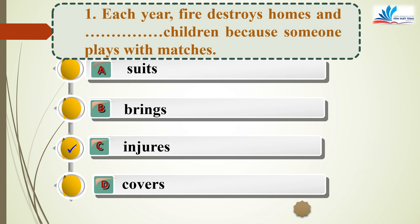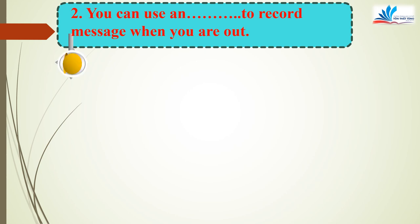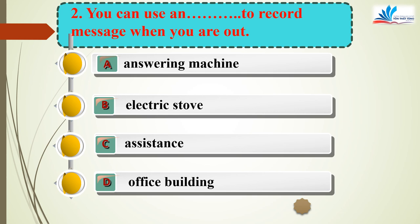Injures means làm bị thương. Mỗi năm, lửa đã phá hủy rất nhiều ngôi nhà và làm bị thương những đứa trẻ vì ai đó chơi với lửa. Question 2: You can use them to record messages when you are out. A, answering machine, is the correct answer. Bạn có thể sử dụng một máy trả lời tự động để ghi lại tin nhắn khi bạn ra ngoài.